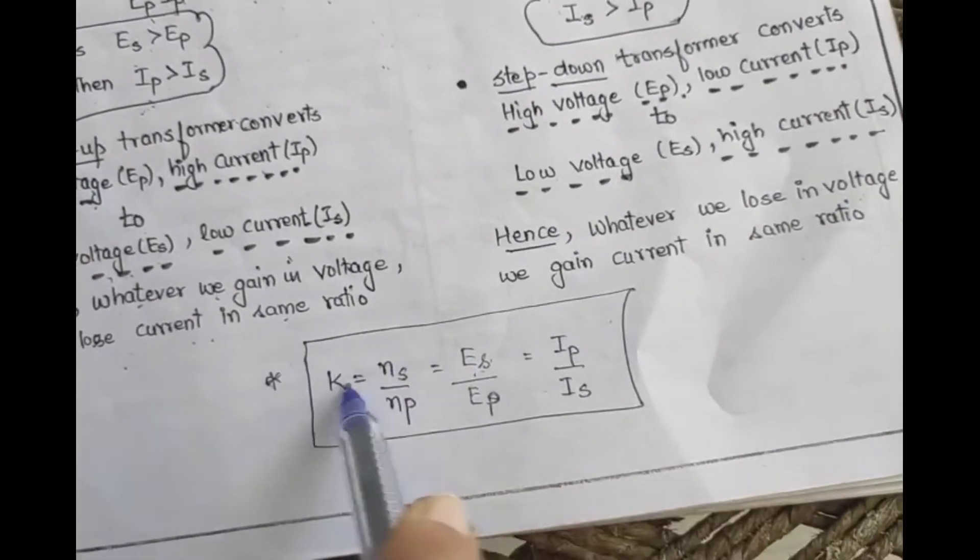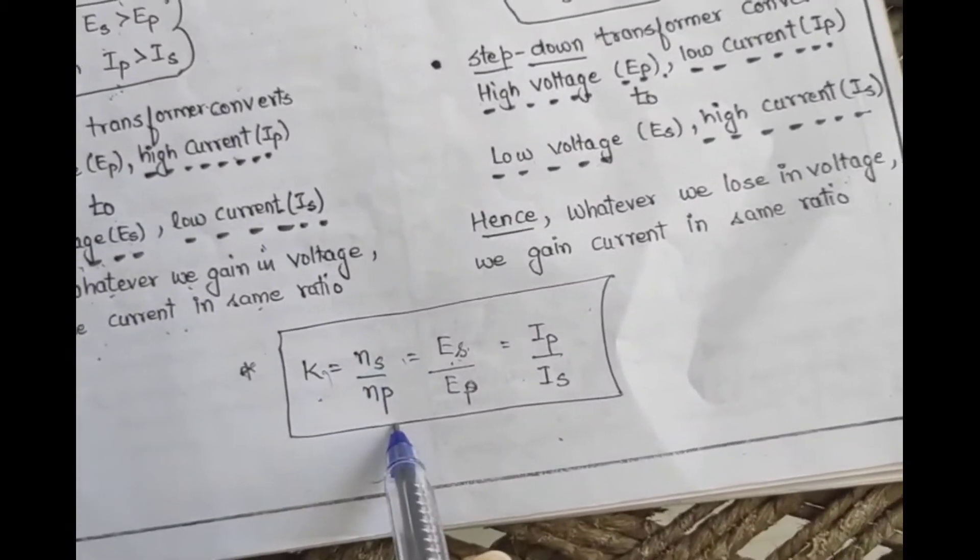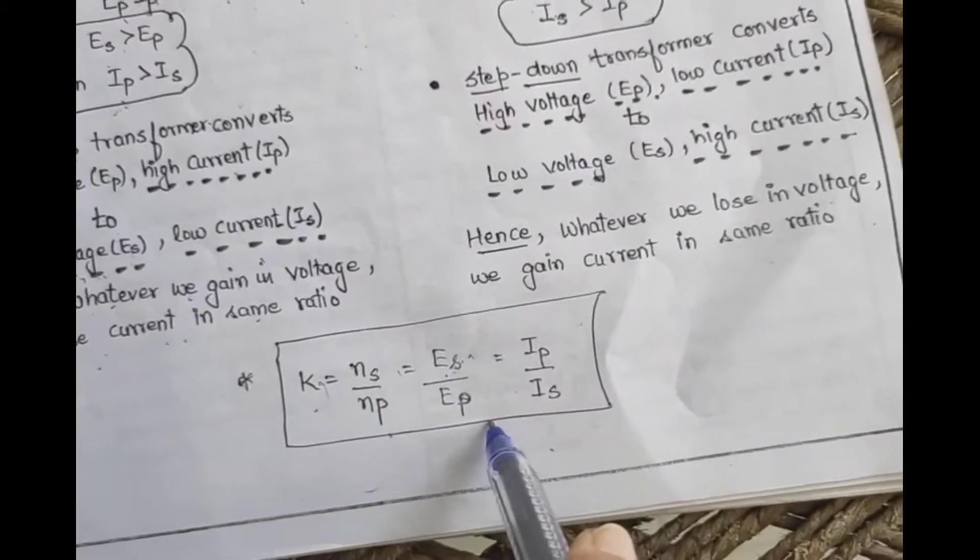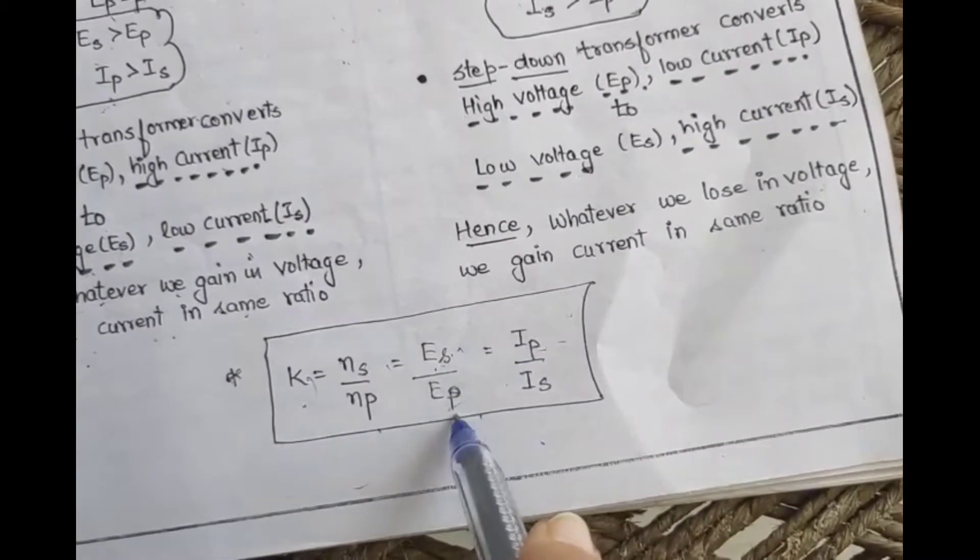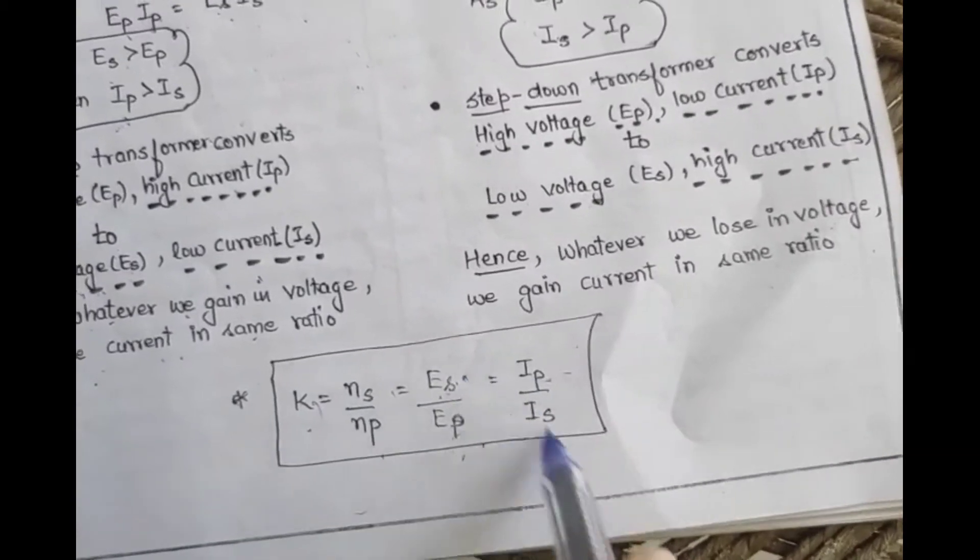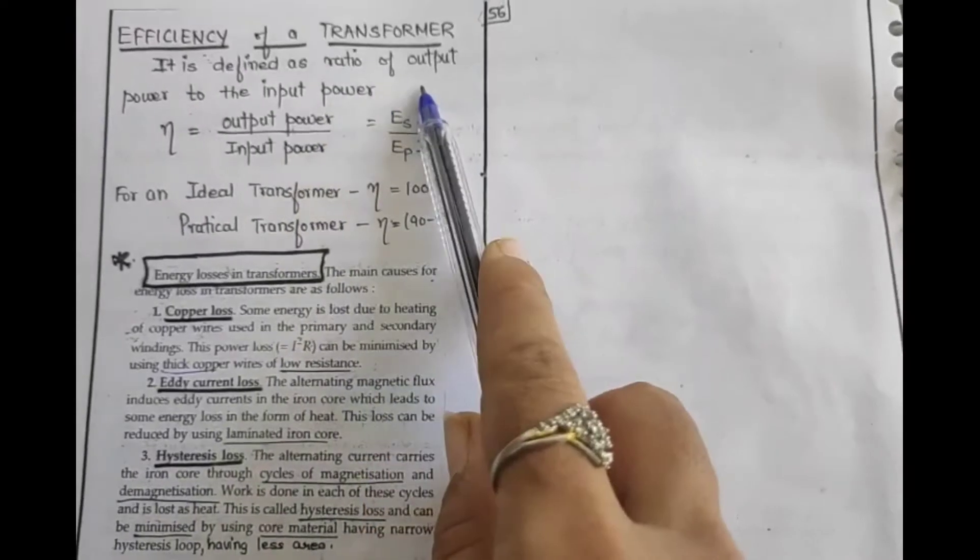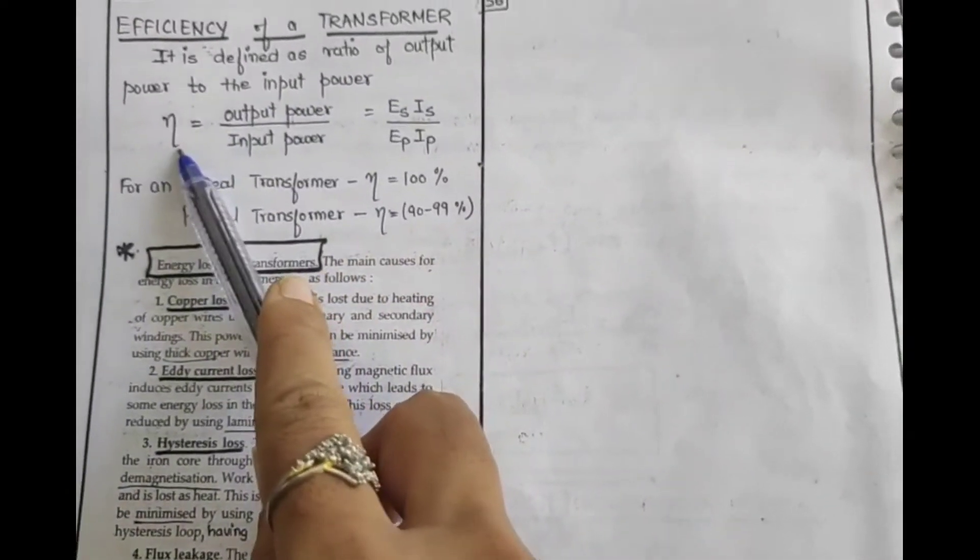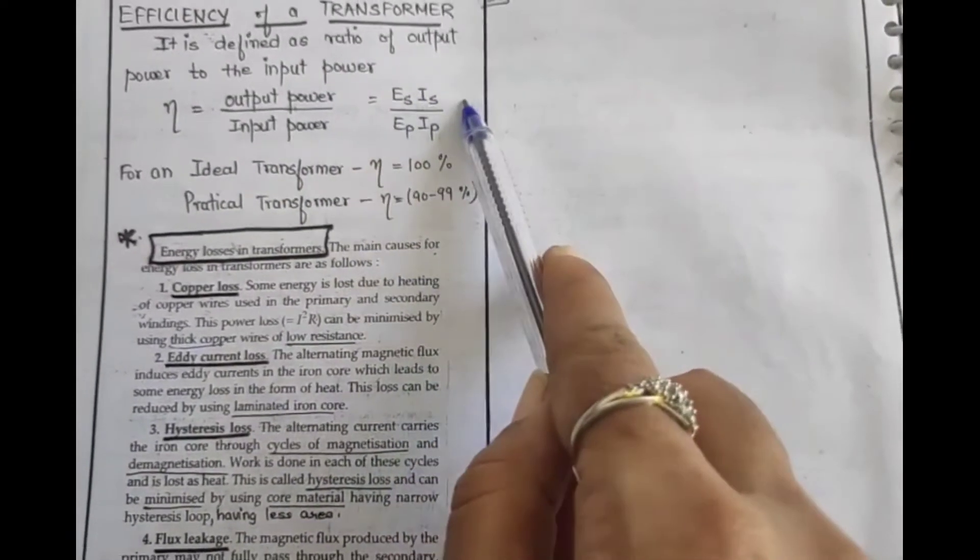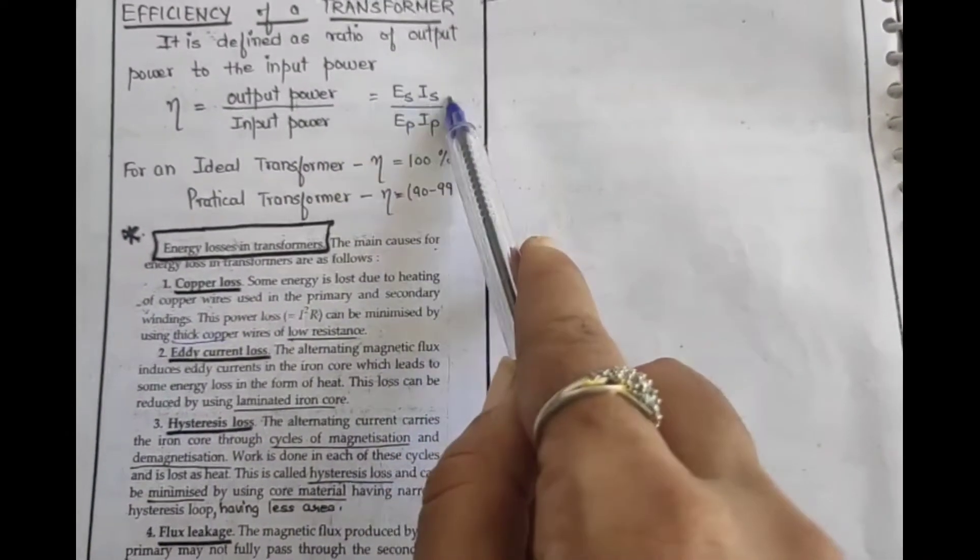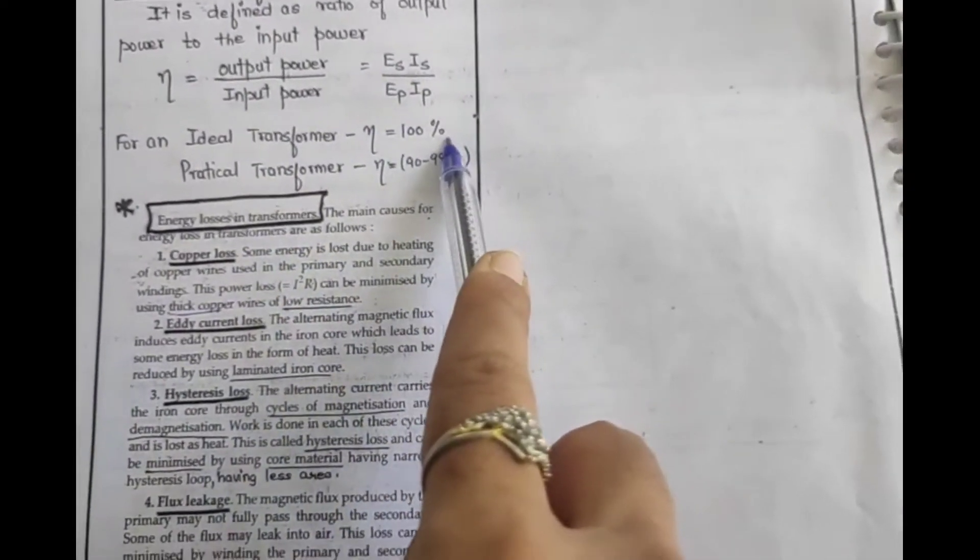For numericals, you have to learn this bracketed formula. What was it? Transformer ratio K = NS/NP = ES/EP = IP/IS. But current is in inverse ratio. Check it, EP and IP have inverse ratio, ES and IS have inverse ratio. If we calculate the efficiency of such a transformer, it is denoted by η = output power/input power. So power is VI, meaning EI. ES IS / EP IP. For ideal it is 100%.